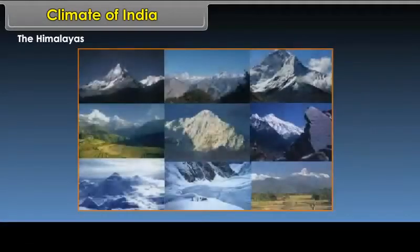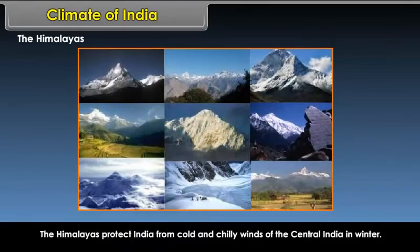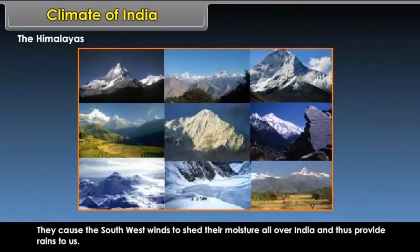The Himalayas protect India from the cold and chilly winds of central Asia in winter. They cause the southwest winds to shed their moisture all over India and thus provide rains.